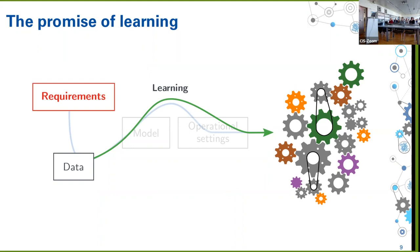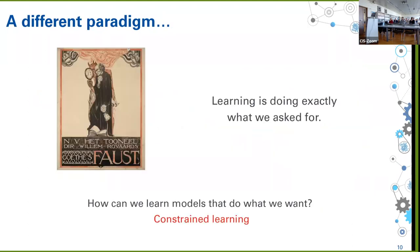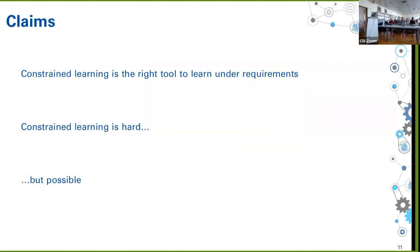If we go back to this engineering cycle, what we are missing becomes clear: requirements. The proposal I want to put forward in this talk is that we need to move forward from minimizing risks as a way to learn, and start learning under requirements. There are three things I want to convince you of: first, that constrained learning is the right tool to learn under requirements; second, that it is hard; and third, that it is possible.